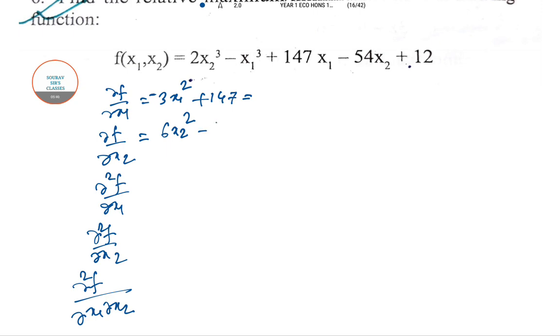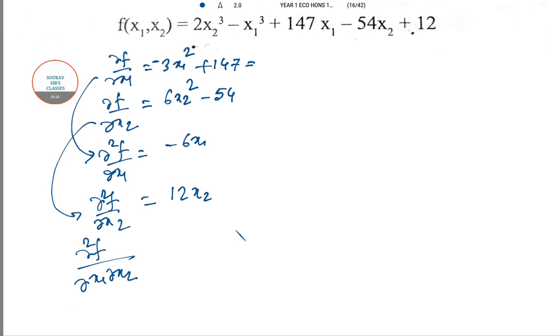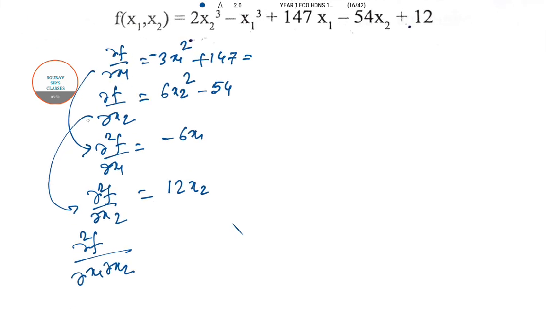Okay, so del f del x1 is minus 3x1 squared plus 147. Del f del x2 is 6x2 squared minus 54. Del 2f del x1 squared is the derivative of this again, so this is minus 6x1. The derivative of this is 12x2, and this function differentiated with respect to x1 will give you 0.